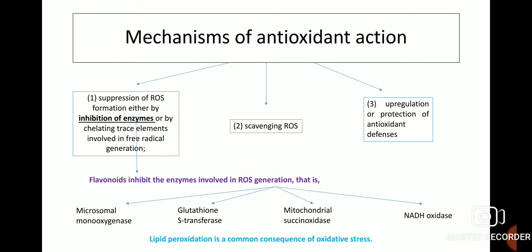The mechanism of antioxidant action operates by three ways: first, by suppression of ROS formation either by inhibition of enzymes or by chelating trace elements involved in free radical generation. Flavonoids mainly inhibit the enzymes involved in ROS generation — microsomal monooxygenase, glutathione S-transferase, mitochondrial succinate oxidase and NADH oxidase — and lipid peroxidation is a common consequence of oxidative stress. Second, by scavenging ROS (reactive oxygen species). Third, by upregulation or protection of antioxidant defenses.